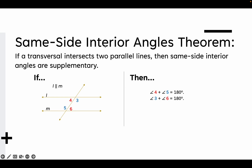Same Side Interior Angles Theorem: if a transversal intersects two parallel lines, then same side interior angles are supplementary. In other words, if L is parallel to M and we have a transversal, then angle 4 plus angle 5 equals 180 degrees. Likewise, angle 3 plus angle 6 is also going to be 180 degrees.